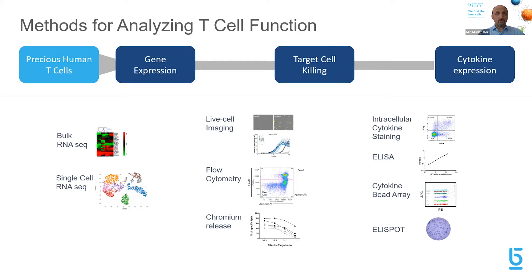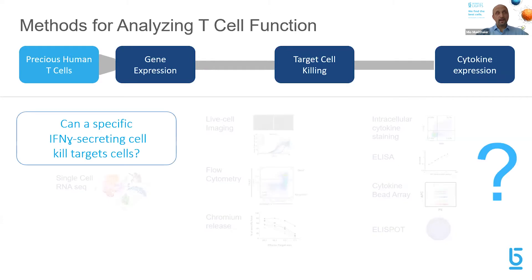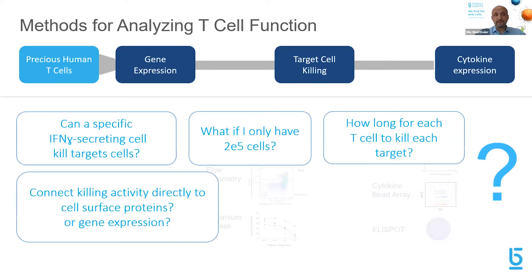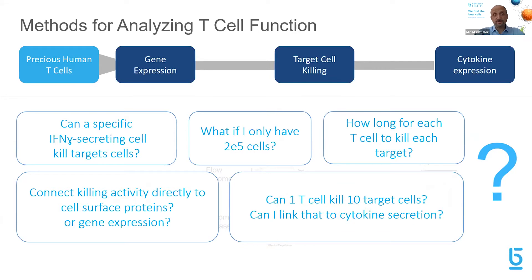A lot of questions remain unanswered, like can a specific interferon gamma secreting cell kill a target cell? What would you do if you only have a few thousand cells, like from a spinal fluid sample with a very low number of T cells? How long does it take for a T cell to kill a tumor cell, and could you connect this killing activity directly to cell surface protein or gene expression? Do you really only need one T cell to kill multiple tumor cells, or do you need multiple T cells to kill one tumor cell?